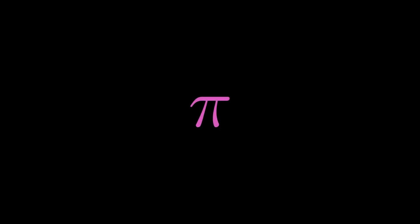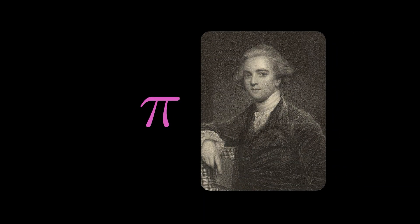This is the symbol for Pi. The Welsh mathematician William Jones introduced this symbol in 1706.